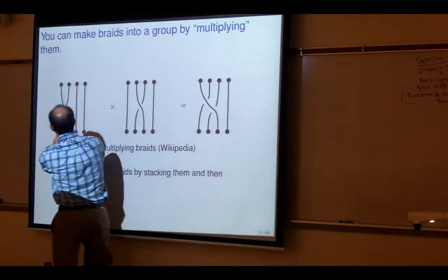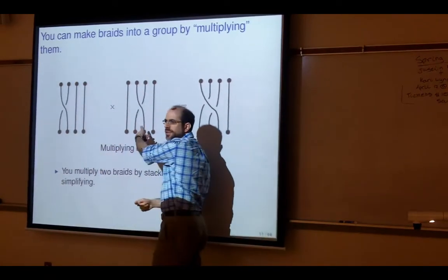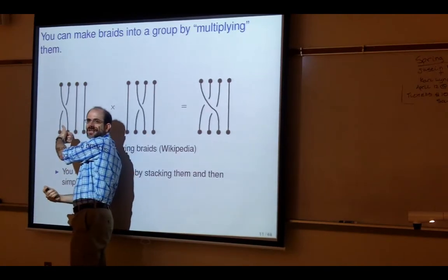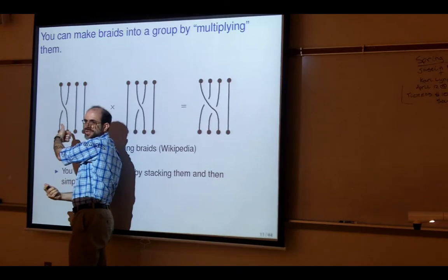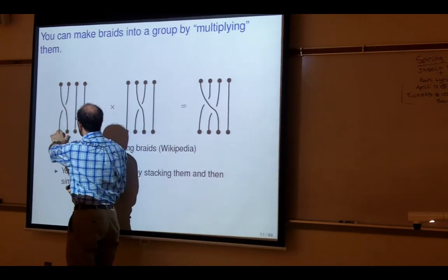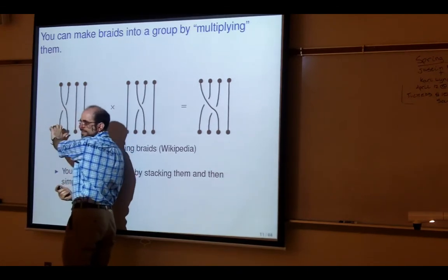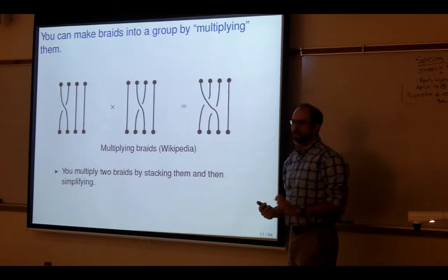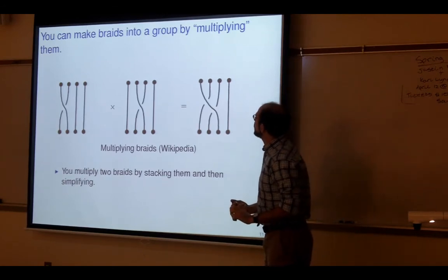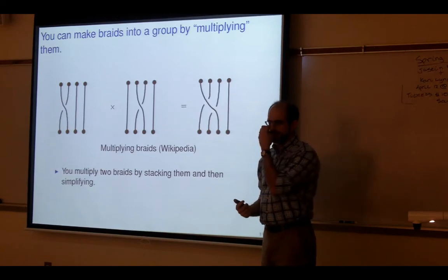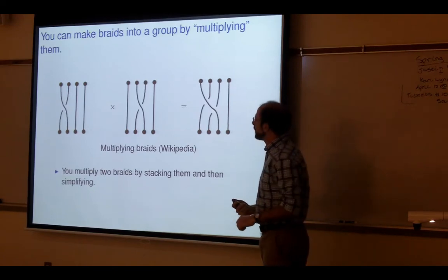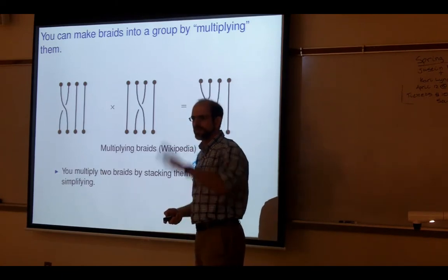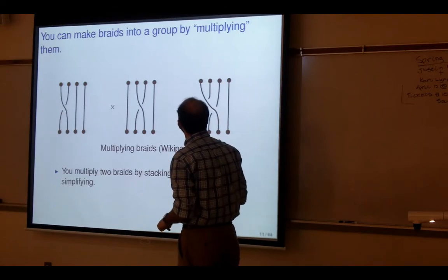It's related to the symmetric group — you can think of this as interchanging these two strands and that as interchanging those two. But if you interchange two things and then interchange them in the same direction again they don't cancel out — it matters what direction you're switching. To cancel out you have to switch back in the opposite direction. For those who know algebra, there's a surjective homomorphism from this onto the symmetric group. But I'm not actually going to talk about that for the rest of the talk.